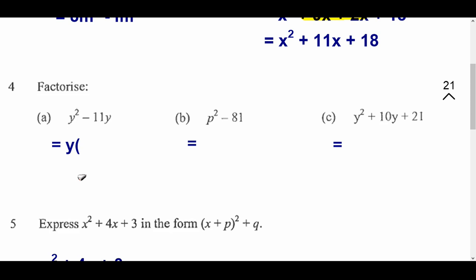Open up your bracket, and you think, well, what do I need to multiply y by to get this? So, I need a y at the front to make y squared. I need a take away. I need an 11 to make the 11y at the end.